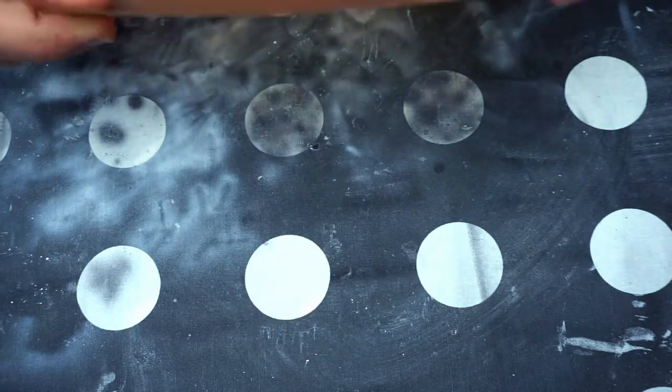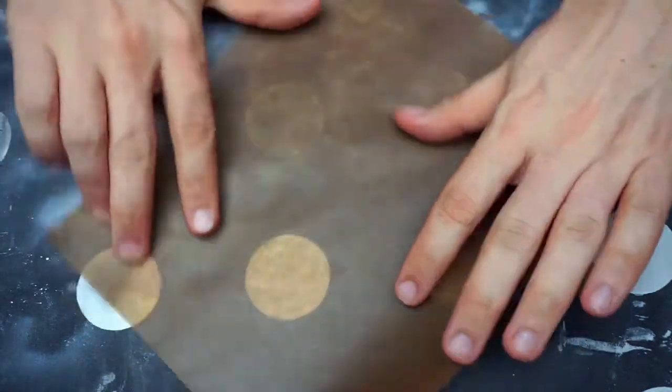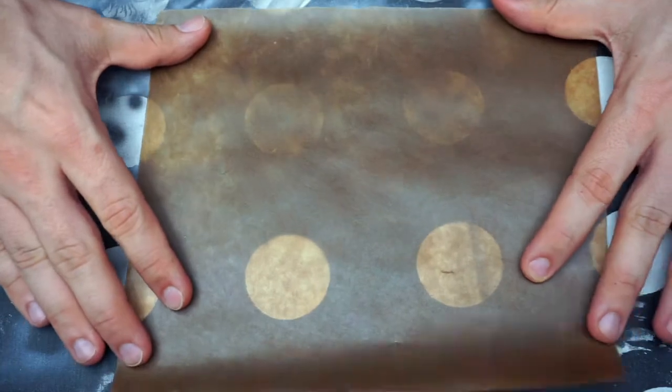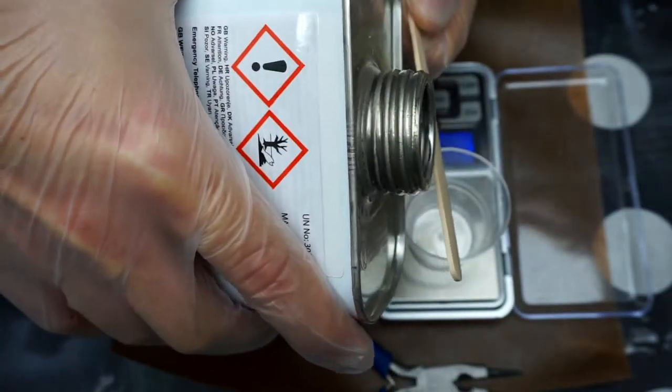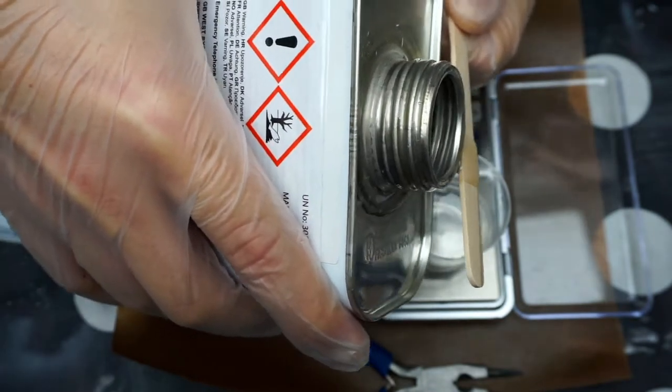I start by making a prototype and for this I am laying out some silicone paper for later use. I then mix up some resin and I am using Western system here.